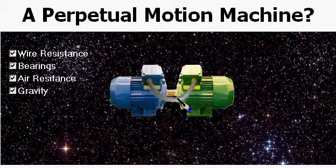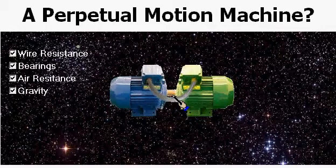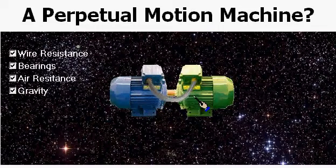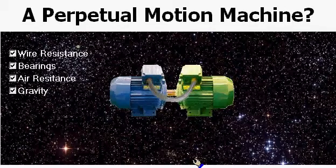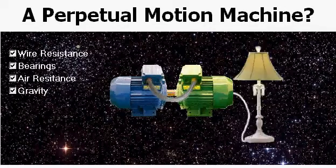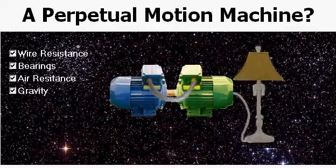Here you can see I have jump-started the perpetual motion machine, and since I removed all the obstacles, it appears to be running just fine. The motor's kinetic energy is being transferred into the generator by the spinning shaft, and the electrical power produced is then transferred back to the electric motor to keep it running constantly. But when I plug a lamp into the generator, the whole system grinds to a stop.